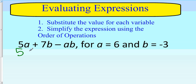Substitute 5 times a. I'll substitute 6 for a, so 5 times 6 plus 7 times b. I'll multiply 7 times b, and b is negative 3. Don't forget the negative there. Minus ab, which means minus 6 times negative 3.